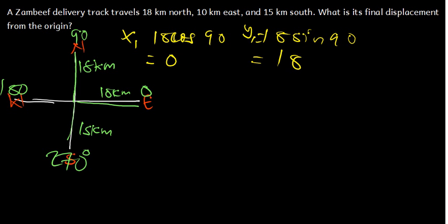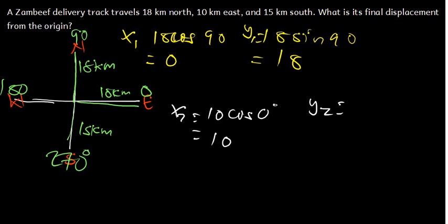For the 10 kilometers east vector: x2 = 10 cos 0° = 10. Then y2 = 10 sin 0° = 0. So x2 is 10 and y2 is zero.